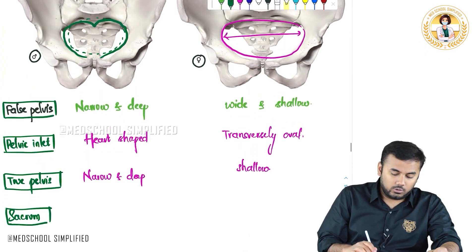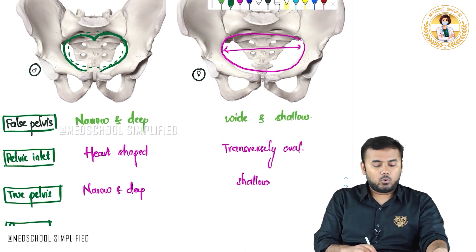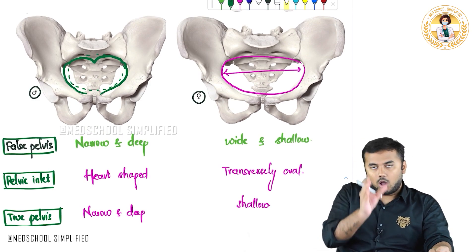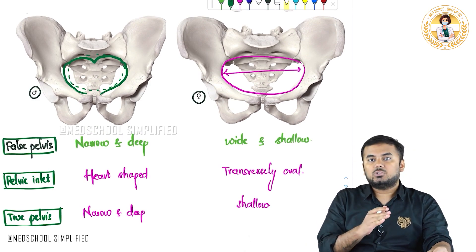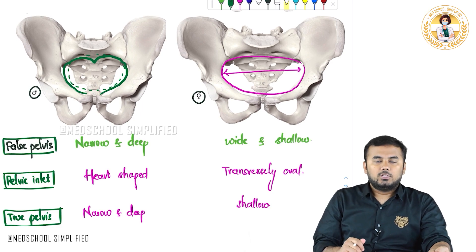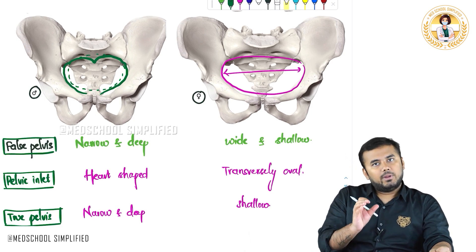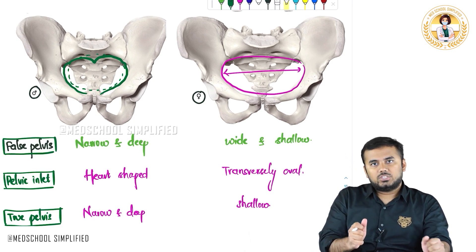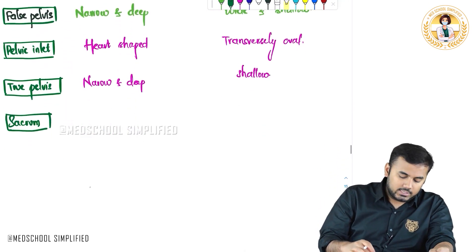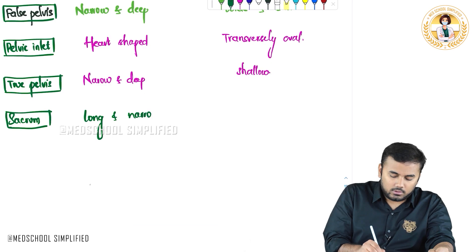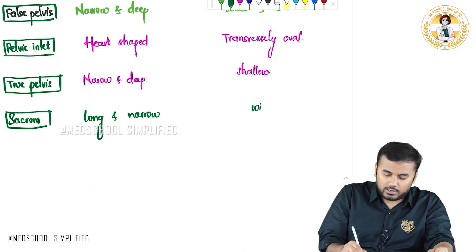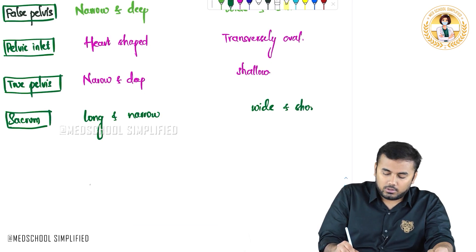Now looking at the sacrum bone, in males it is long and narrow, whereas in females it is wide and short. Anything which is long will be narrow and anything which is wide will be short.